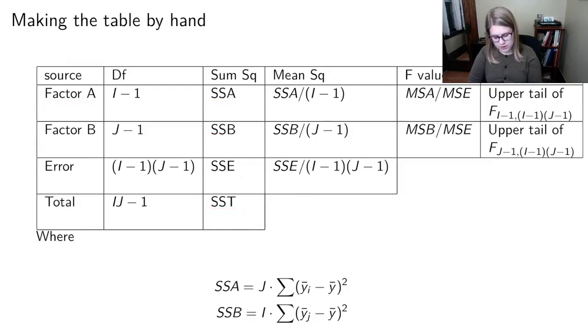Our mean squares are the sum of squares divided by the degrees of freedom. Our F value is the mean squares for a particular level divided by the mean square error. And then we find our P values from an F distribution.